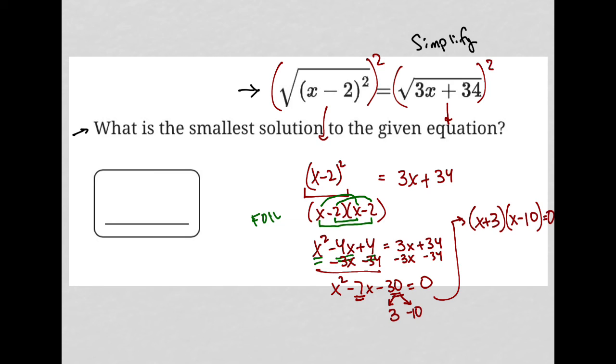The solution here will be to set each of these binomials equal to 0 separately and then solve each one separately. So here I'd have x equals negative 3, and here I'd have x equals 10.